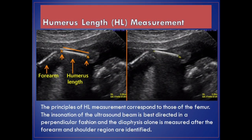Humerus length, HL, measurement. The principles of HL measurement correspond to those of the femur. The inclination of the ultrasound beam is best directed in a perpendicular fashion and the diaphysis alone is measured after the forearm and shoulder region are identified.